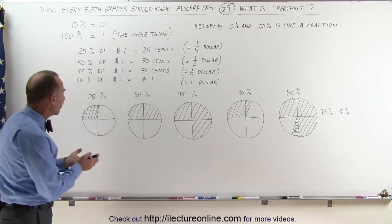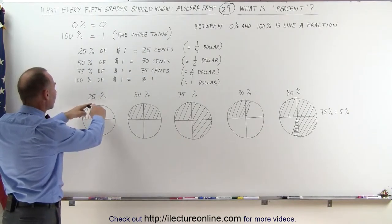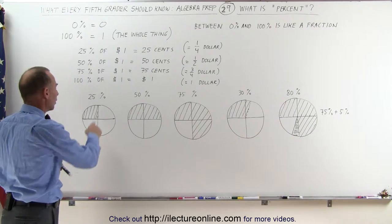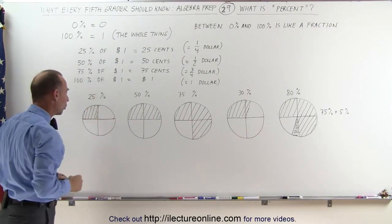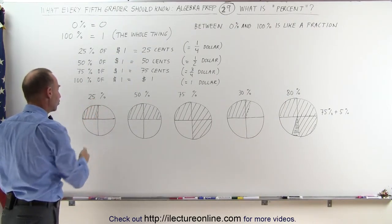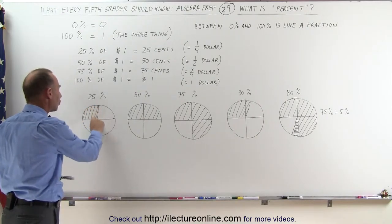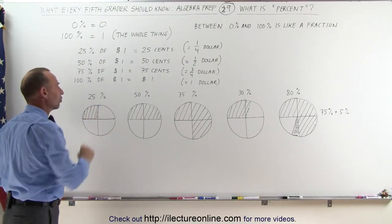Graphically, we can say that 25% represents a quarter of the whole thing. Notice that we've divided this circle into four equal quarters. If I then shade in one quarter of that, I have 25% of the entire circle.